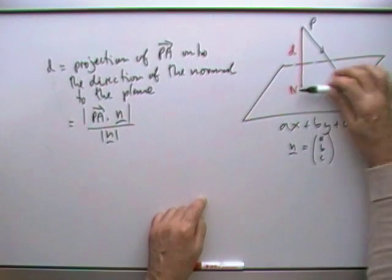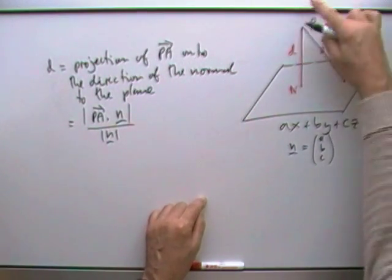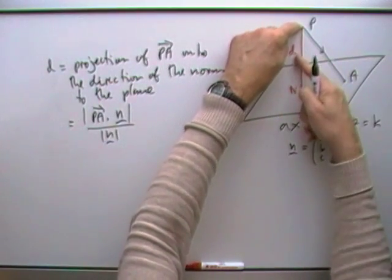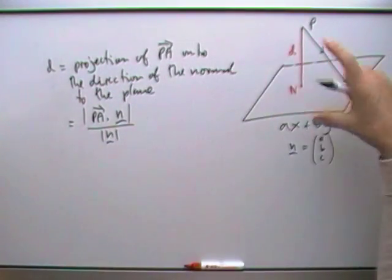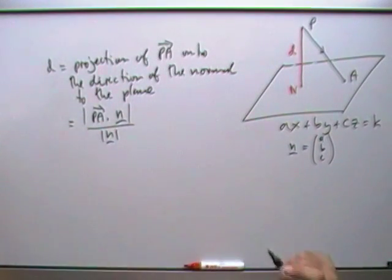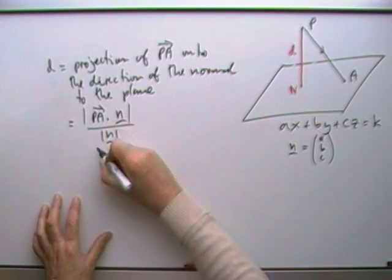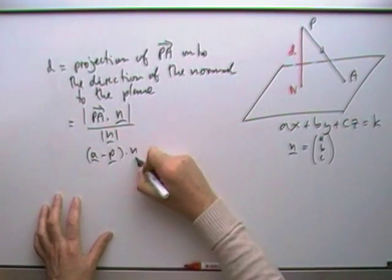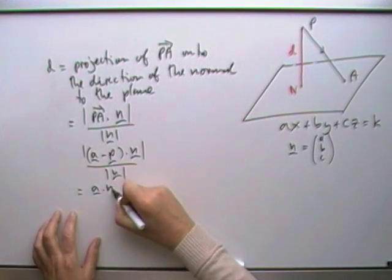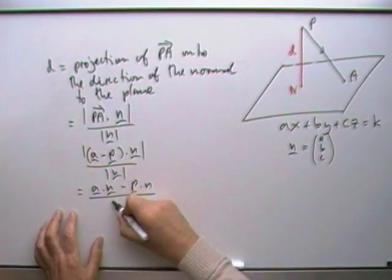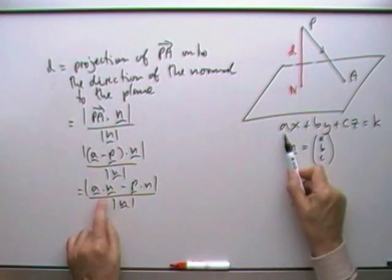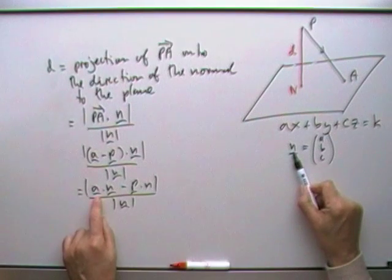The projection — like the shadow of it — of this line onto the normal line. Do the scalar product of that vector with any vector; it doesn't need to be unit length, then simply divide out that length and you'll be left with the projection. Since PA means A minus P, it's A minus P dot N over the length of N, taking the absolute value. Which gives A dot N minus P dot N.